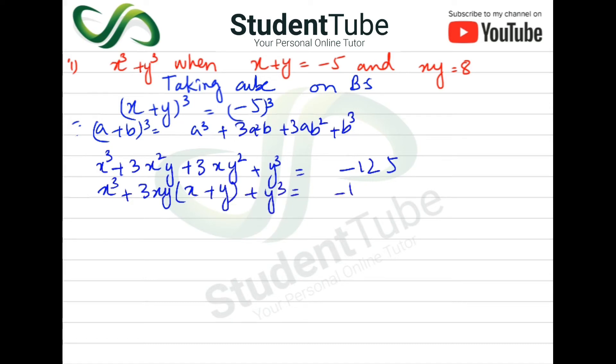So we have x³ + y³ + 3xy(x + y) = -125. Then x + y value is -5 and xy value is 8.